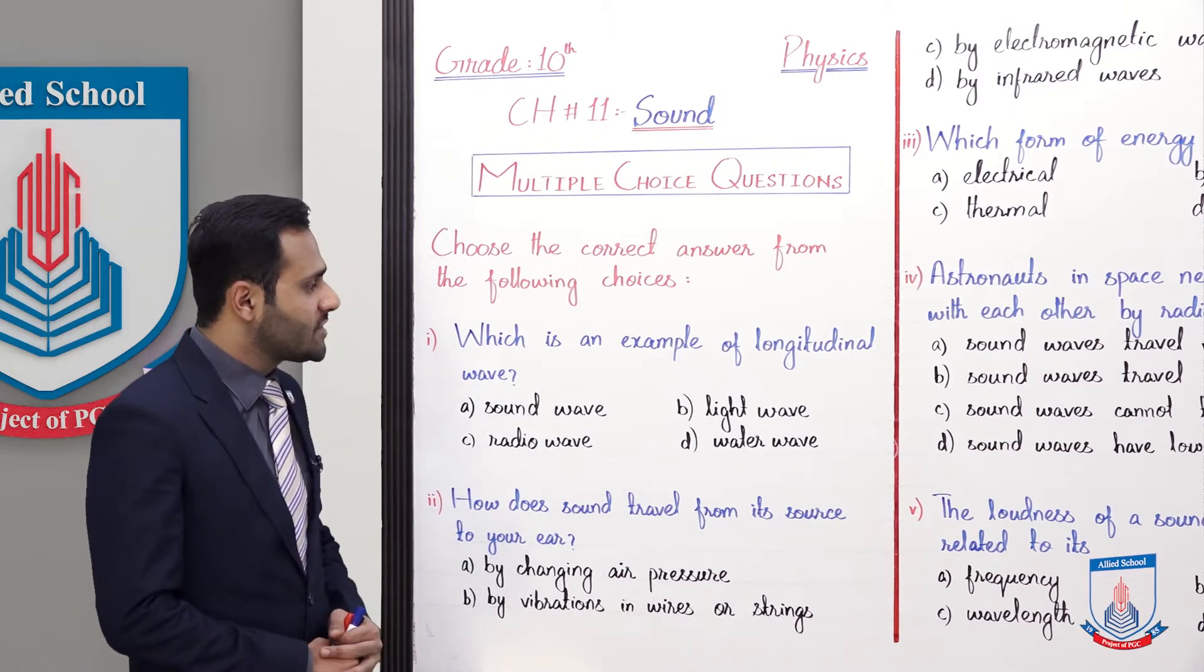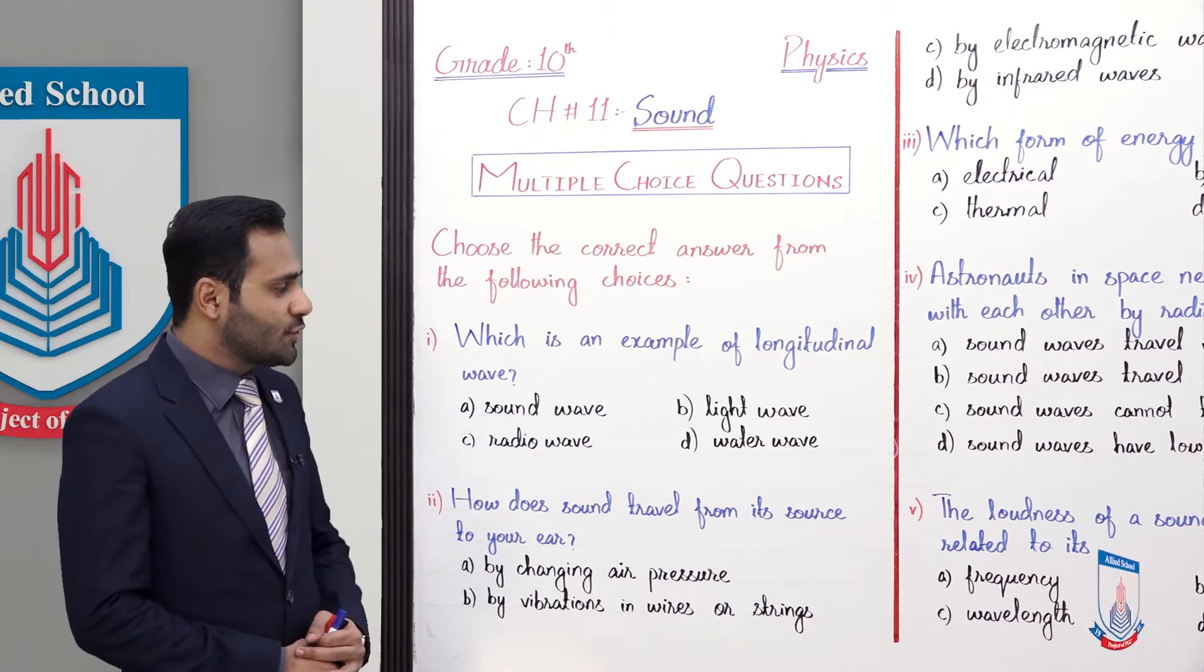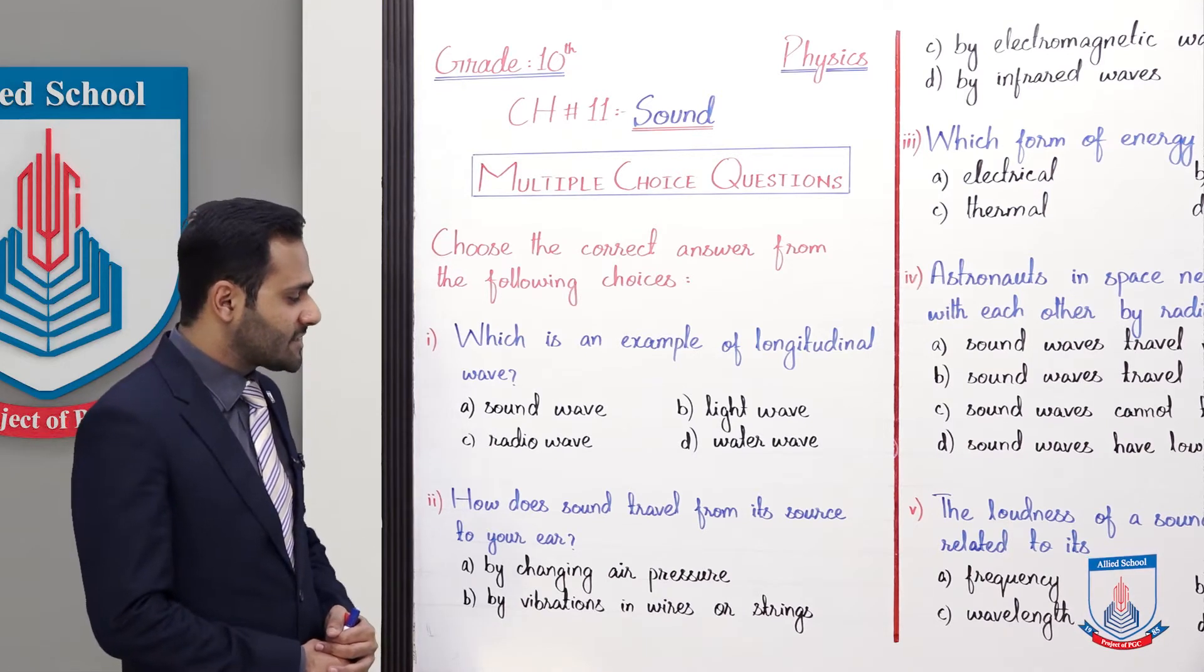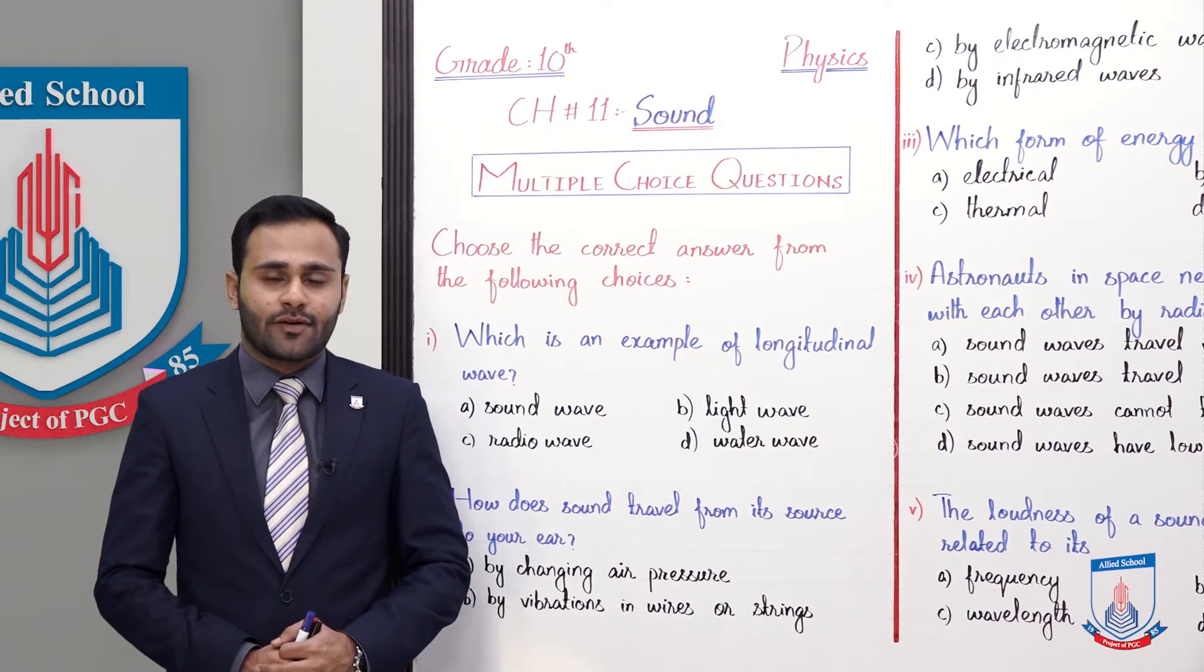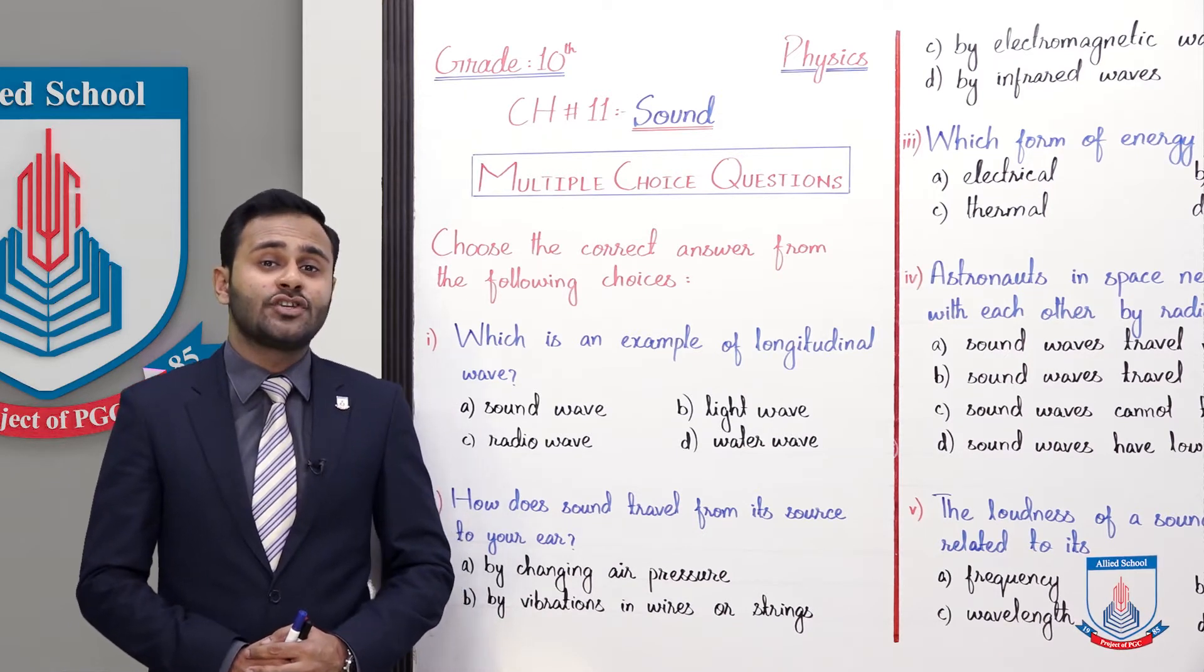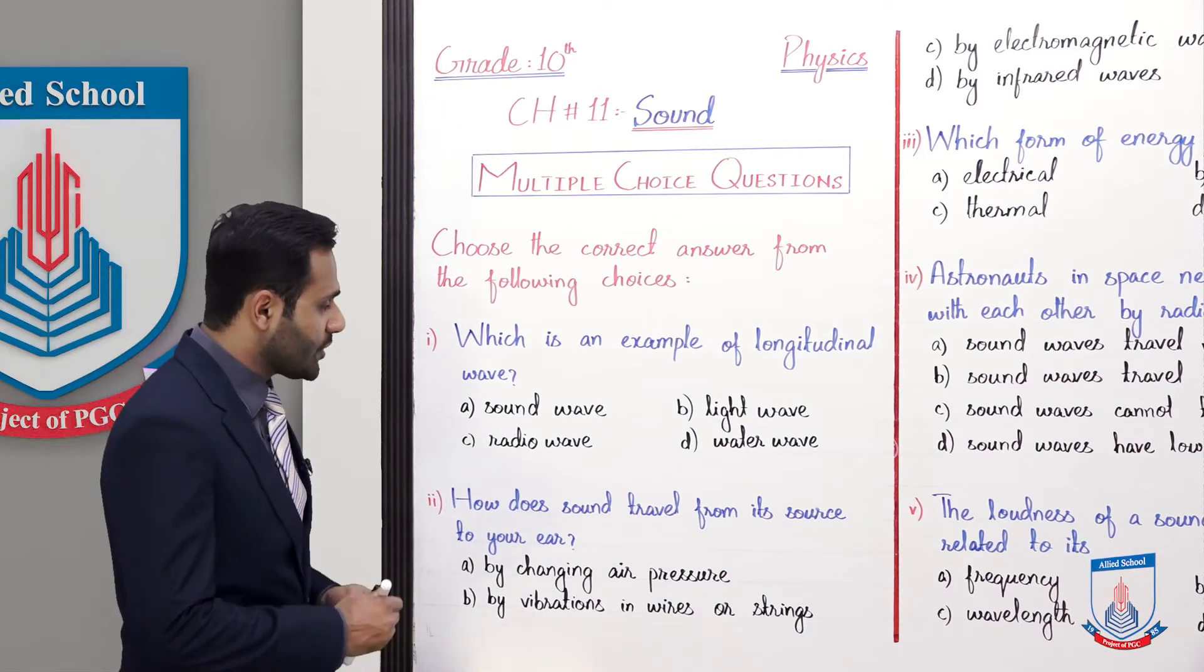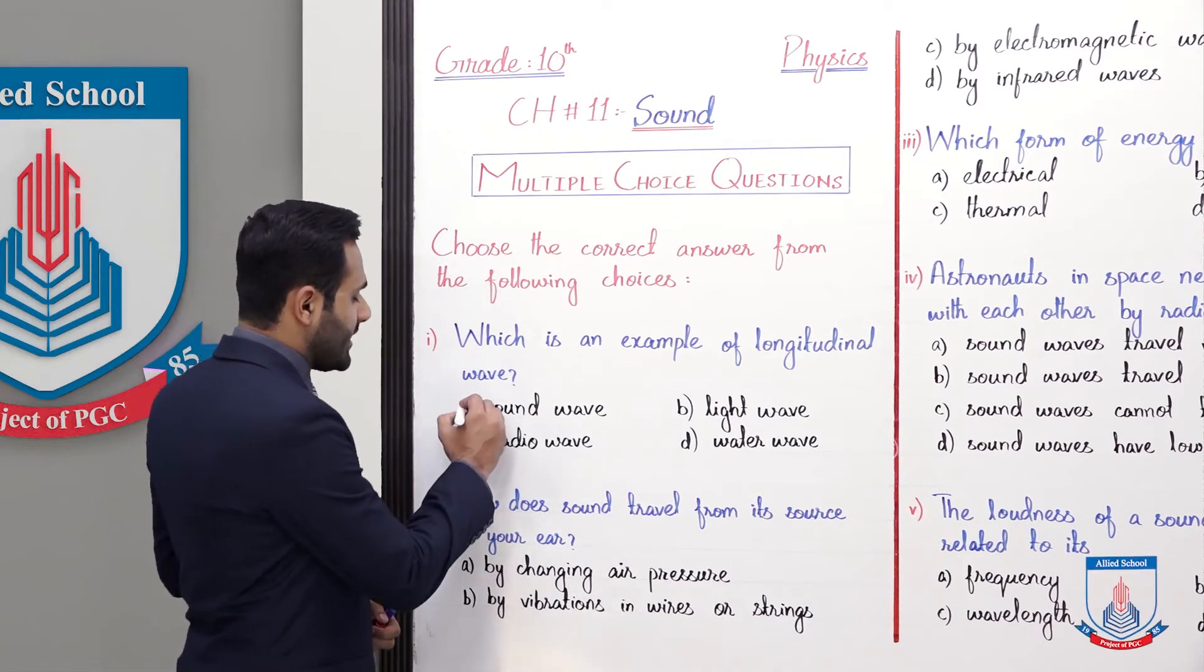So the first MCQ is which is an example of longitudinal wave. A sound wave, B light wave, C radio wave and D water wave. So example of longitudinal wave, sound wave is an example of the longitudinal wave. So the option A is correct.